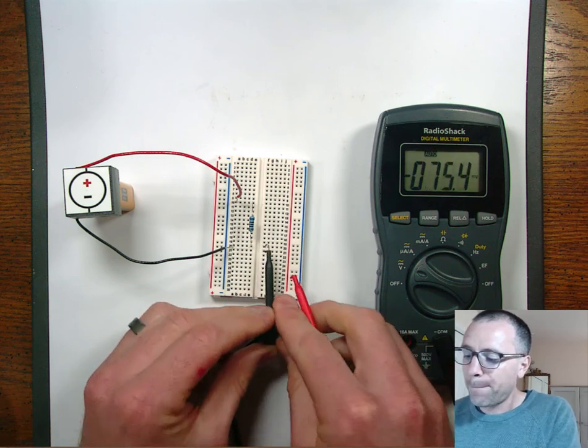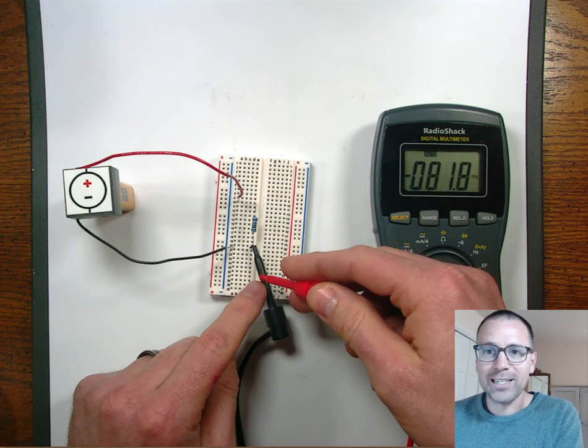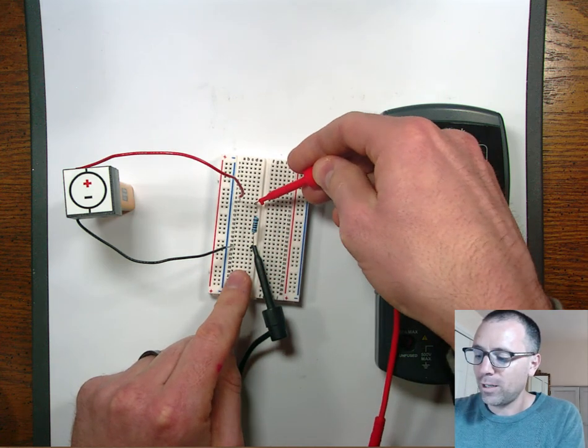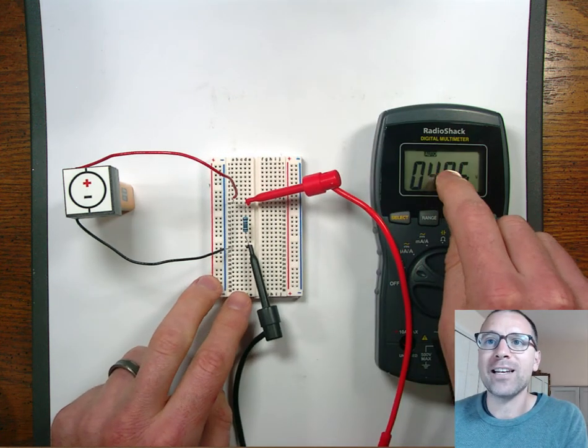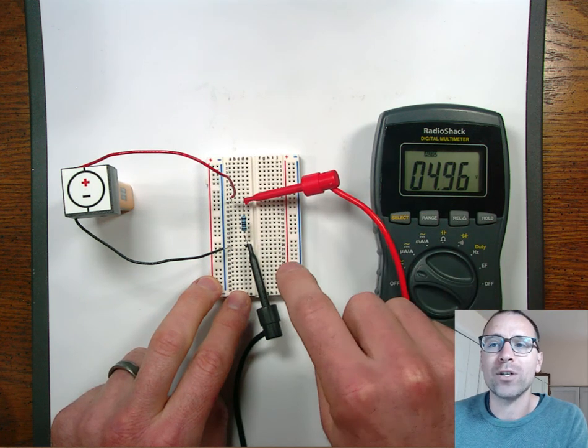Now we take the positive lead and the negative lead, so black is negative, red is positive. We connect it across that element and we get a 4.96 reading for the voltage drop across that resistor.